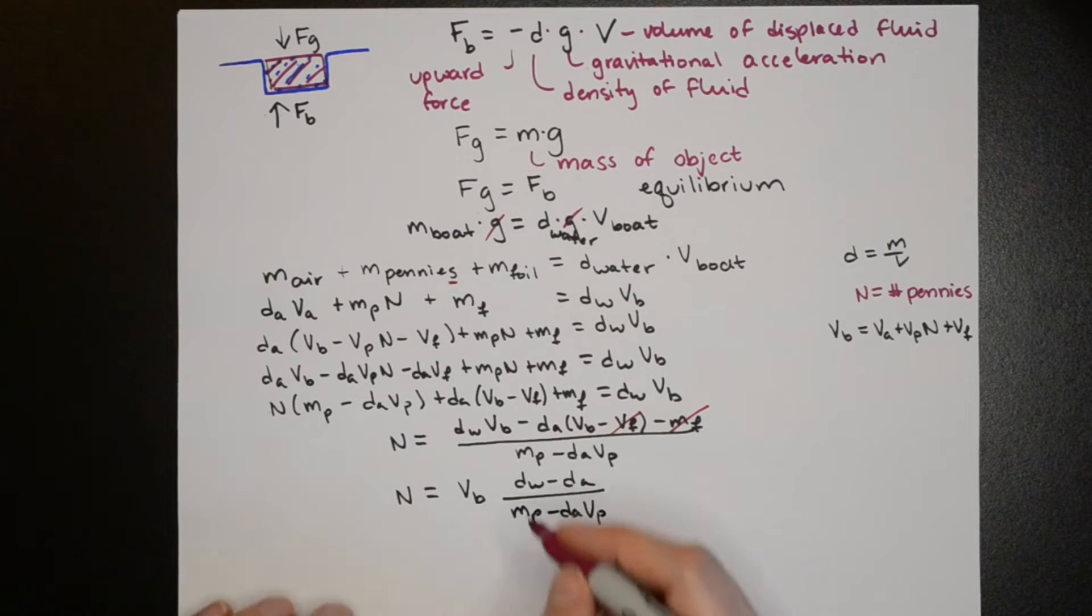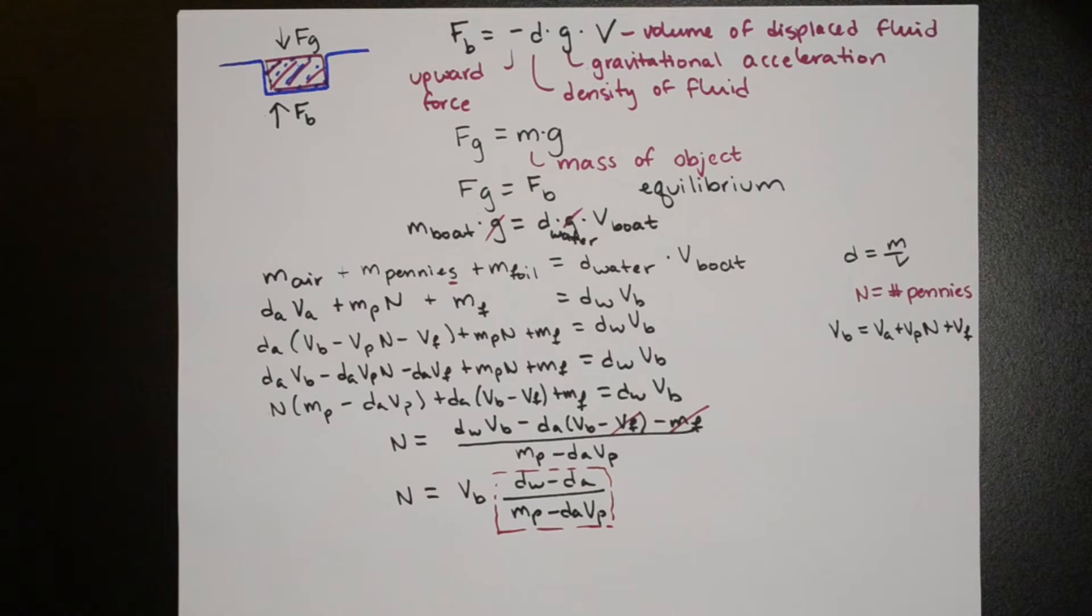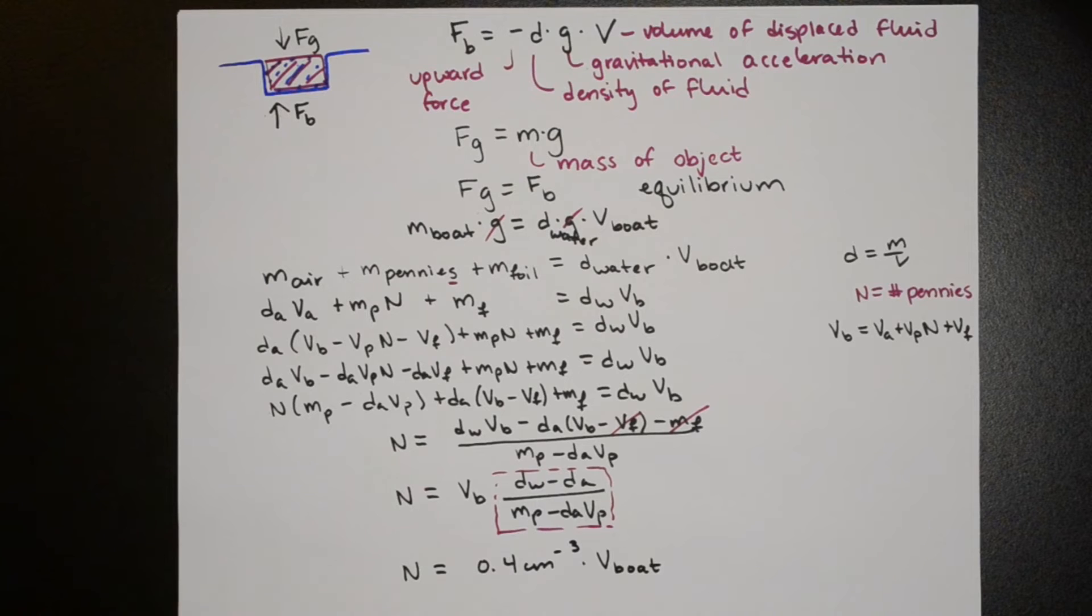Now that we've defined the number of pennies the equation looks kind of complicated. But everything in the box is either something that we can look up the value for or measure it. So what we really have is the number of pennies is equal to the volume of the boat times a constant. Since I've eliminated the foil in the calculation we're assuming this is the maximum so the number of pennies will be less than or equal to n.